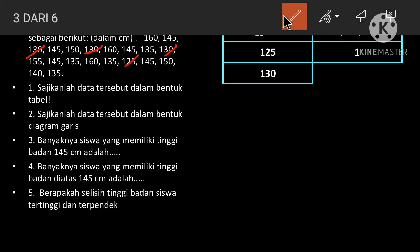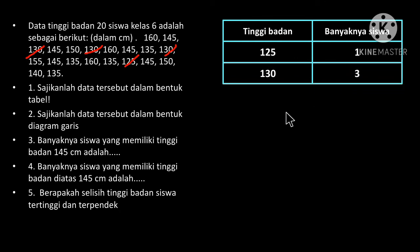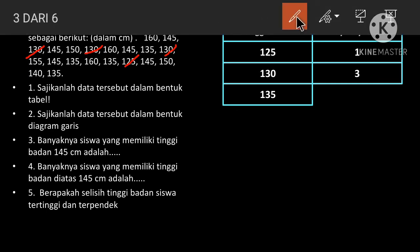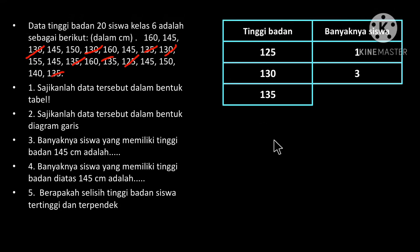Ada tiga siswa dengan tinggi badan 130 cm. Dan tinggi badan yang selanjutnya adalah 135 cm. Mari kita hitung bersama-sama. Satu, dua, tiga, empat. Ada empat siswa dengan tinggi badan 135 cm.